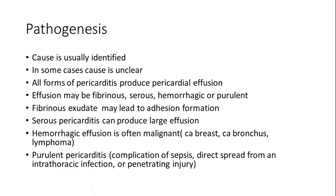Regarding pathogenesis, a cause can usually be identified, but in some cases the cause is unclear. All forms of pericarditis — whether the cause is known or not — usually produce pericardial effusion, which is an increase in the fluid in the pericardial space. The effusion can be fibrinous, serous, hemorrhagic, or purulent. Subsequent complications may depend on the type of fluid present. Fibrinous exudate may lead to adhesion formation and later to constrictive pericarditis.